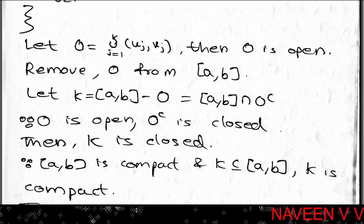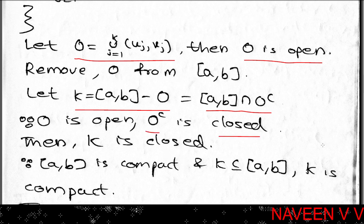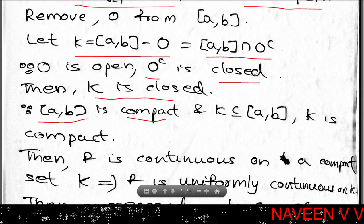Let O equal the union j=1 to k of open intervals (u_j, v_j). Since O is a finite union of open sets, O is open. Remove O from [a, b]; denote the resulting set as K. So K equals [a, b] minus O, which equals [a, b] intersected with O-complement. Since O is open, O-complement is closed. K is the intersection of two closed sets, so K is closed. K is a closed subset of [a, b], and [a, b] is compact, so K is compact.